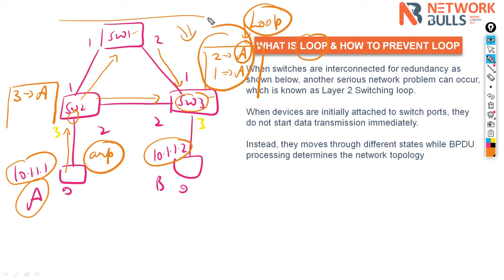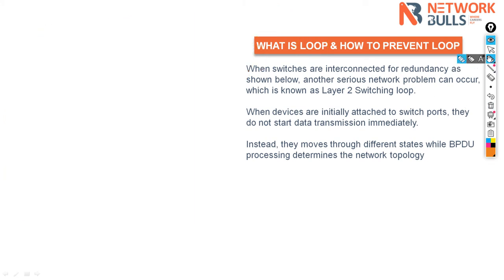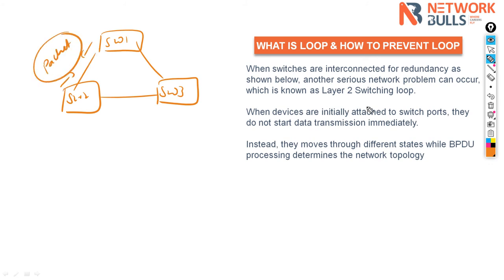Now we have to resolve the problem that loop should not form. Whenever you connect three switches in a redundant way, first of all let me clear it's not about connecting three or four switches, it is about connecting switches so they will run a process in the back end. This process is run with the help of a packet. These packets are called BPDUs and the process is called spanning tree.